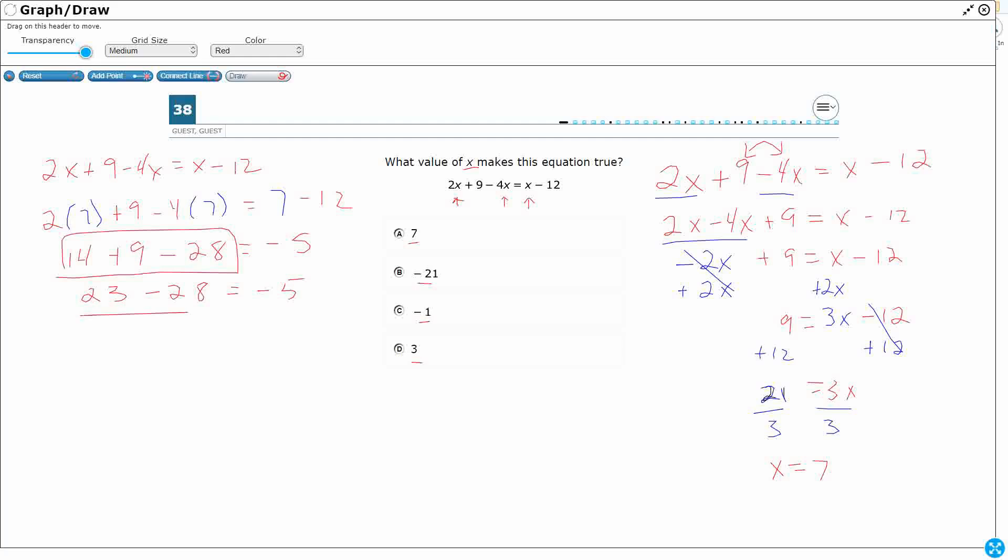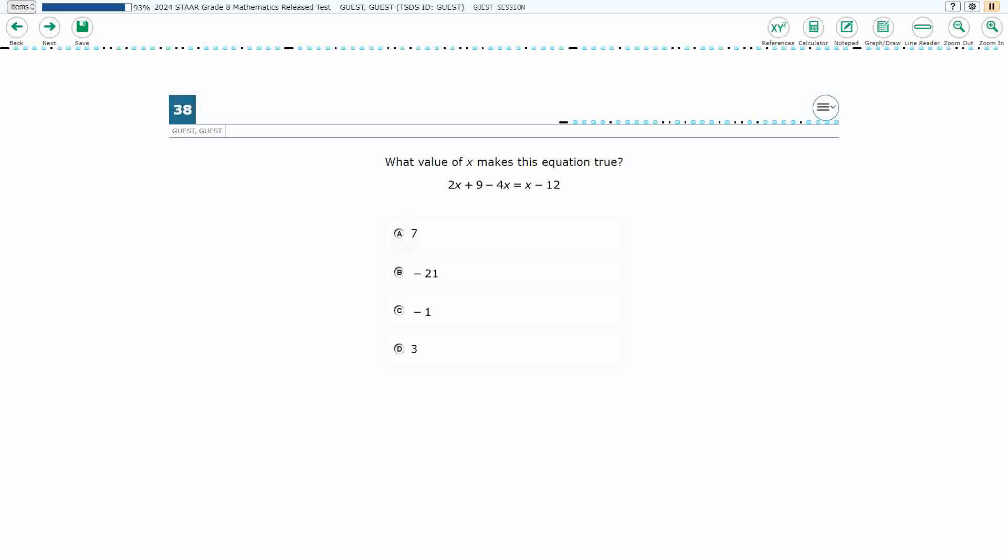And we do see that, 23 minus 28 is going to get us negative 5. So the fact that we have a true statement here, negative 5 equals negative 5, means that when we make x equals 7, that makes the equation true. That's what we're looking for. So that is going to be our answer, A, 7.